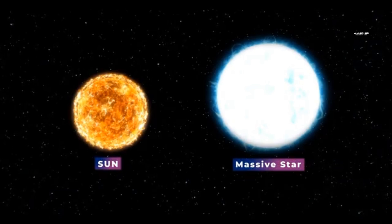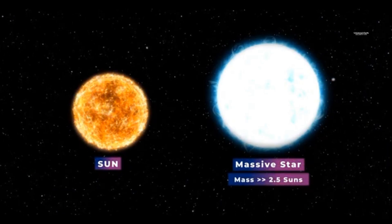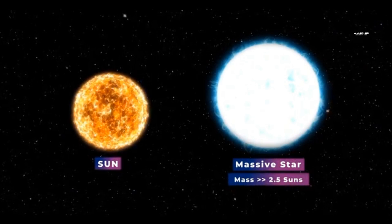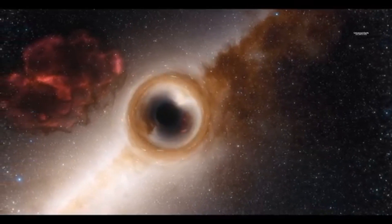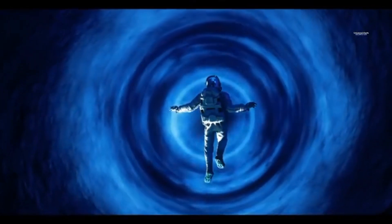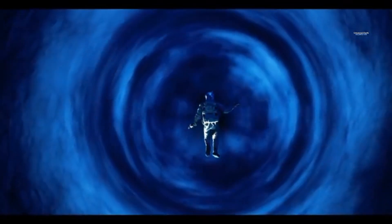If the mass of a star is 2.5 to 3 times greater than the Sun, it transforms into a black hole. Black holes are considered the strangest objects in the universe. Within a black hole, the laws of physics as we know them break down.